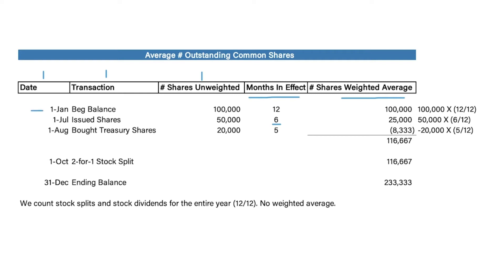Our beginning balance is 100,000 shares, in effect for the entire year, so the weighted average is also 100,000. We issue an additional 50,000 shares halfway through the year — only in effect for six out of twelve months, so we record 25,000. On August 1st, we bought treasury shares, buying back some of our company's stock, so there are fewer shares outstanding. Since we bought them August 1st, this was only in effect for five months, so we take negative 20,000 times five over twelve.